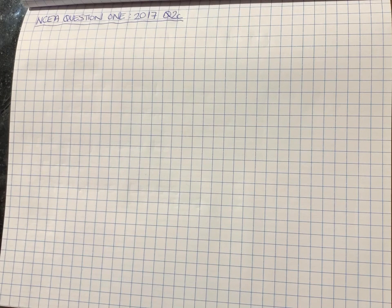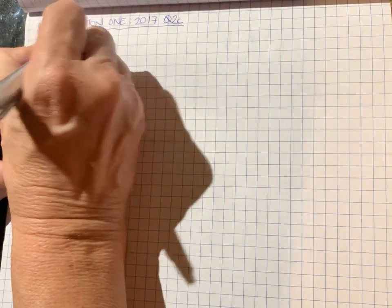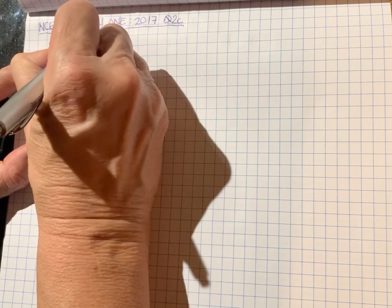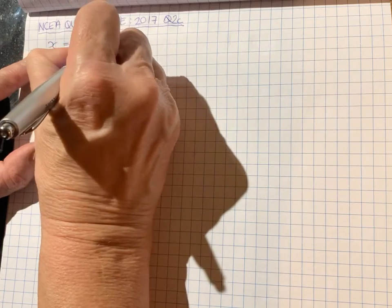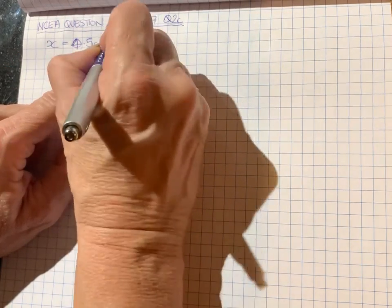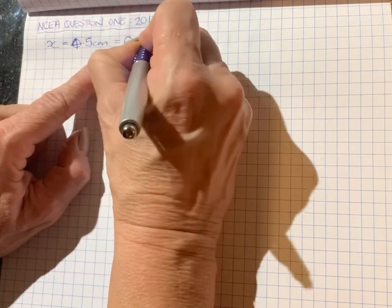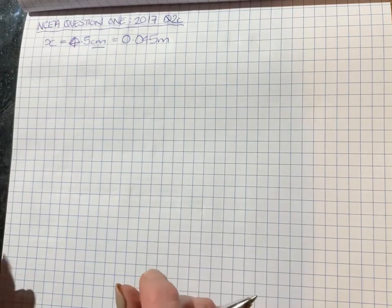We know that the compression of each spring is given the letter x, so let's write that to start with in terms of our given. x is 4.5cm, but cm are not a standard international unit, so we need to change it to meters by dividing by 100, and we get 0.045m.